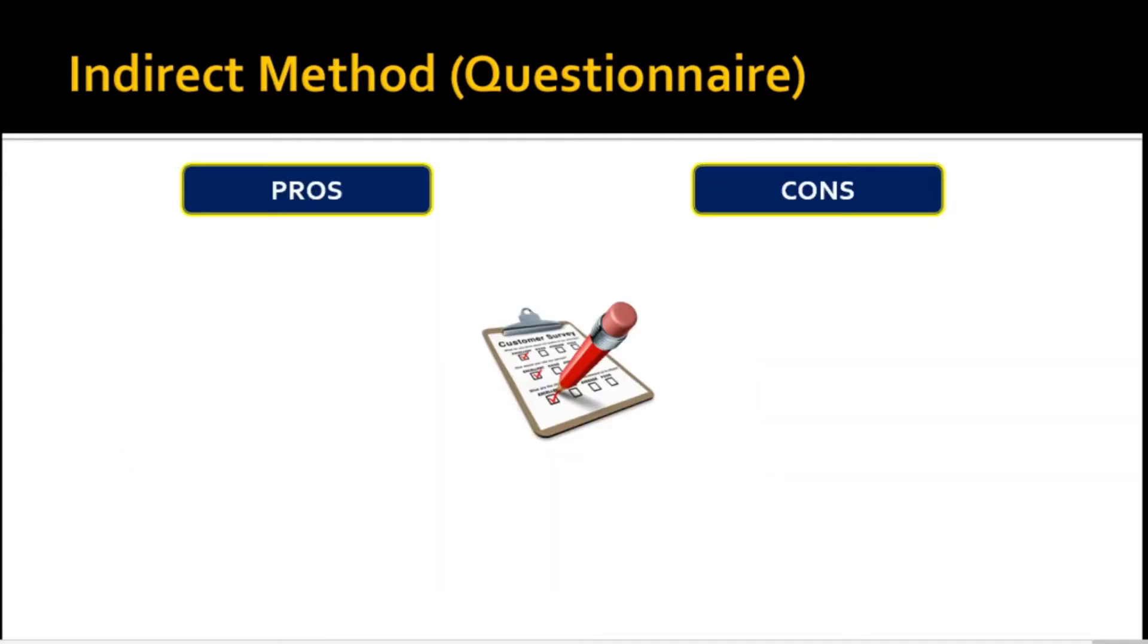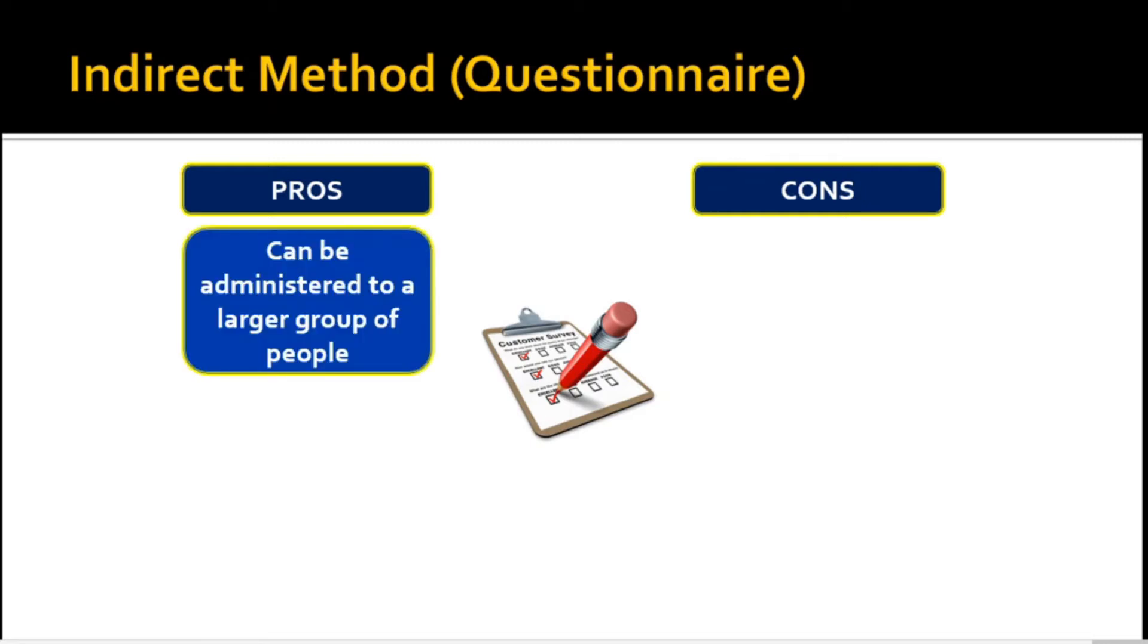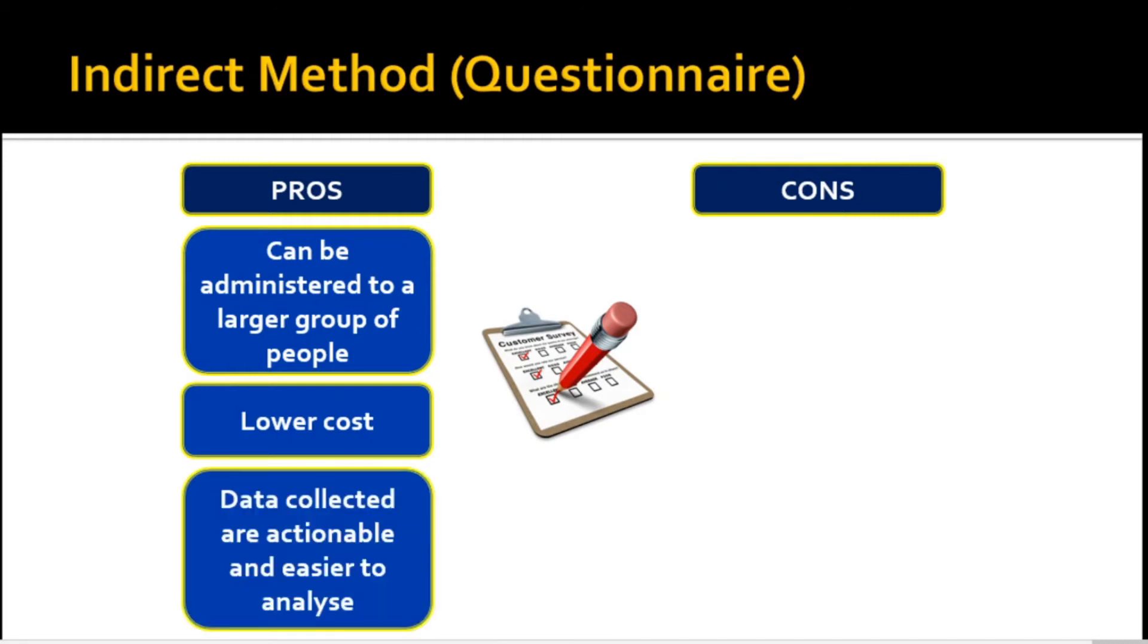Because questionnaires can be reproduced, administration of it can be done to larger groups of people. This reduces the cost of research because data is gathered simultaneously from several people as opposed to interviews as it is being limited to few people only. Moreover, data analysis is easier since the questionnaire is pre-structured according to the objectives of a research.